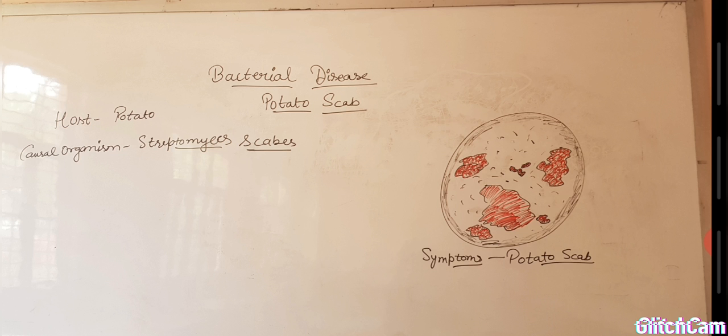Scab is more severe when tubers develop under warm, dry soil conditions. Next, they are more conducive to scab than fine textured soils.